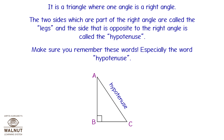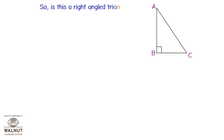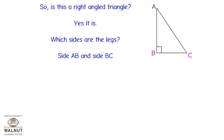Hence, in triangle ABC, angle B is a right angle and segment AC, which is opposite to the right angle, is called the hypotenuse. So, is this a right-angled triangle? Yes, it is. Which sides are the legs? Side AB and side BC. Which side is the hypotenuse? Side AC.